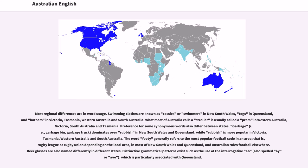What most of Australia calls a stroller is usually called a pram in Western Australia, Victoria, South Australia, and Tasmania.